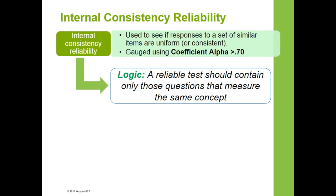The second type of reliability is called internal consistency reliability, and this is the one that tends to throw people off. Instead of looking at test scores over time, we're looking at consistency across the items contained in the same assessment. We're trying to see if the responses to a set of similar items are uniform or consistent. The key logic is that a reliable test should contain only those questions that measure the same concept.